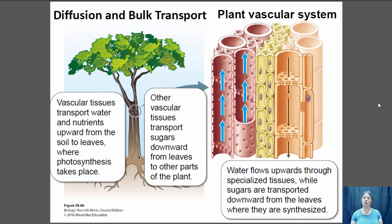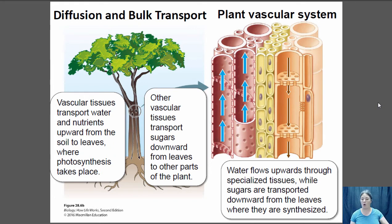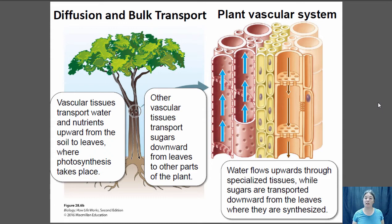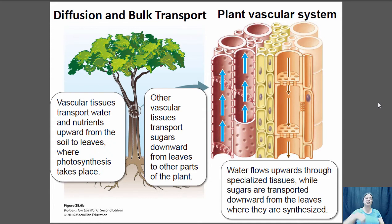Plants actually have a similar system. They have their vascular system that transports nutrients and water around the tissue of the plant, so it's not relying on diffusion to slowly move sugars made in the leaves down to the roots. They have the phloem, which takes those sugars produced in the leaves and pumps them down to the roots much more quickly — it's bulk transport.